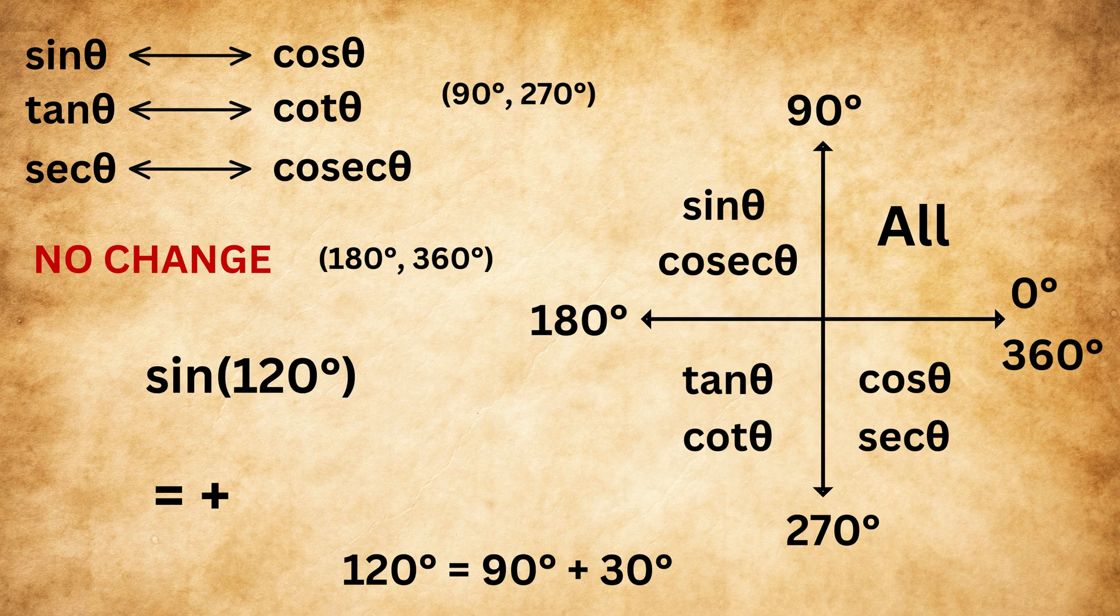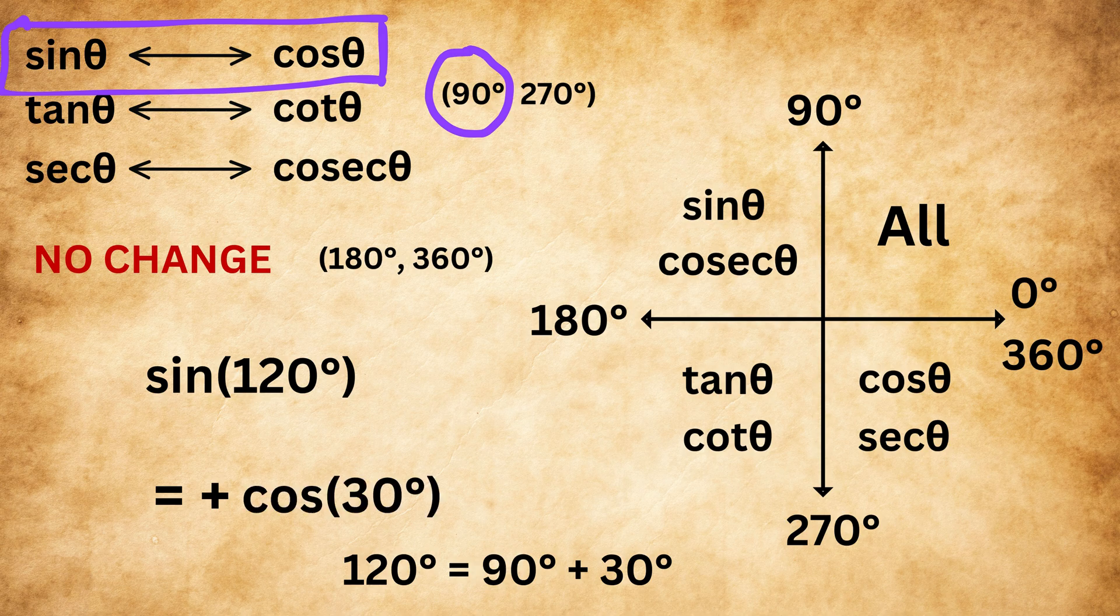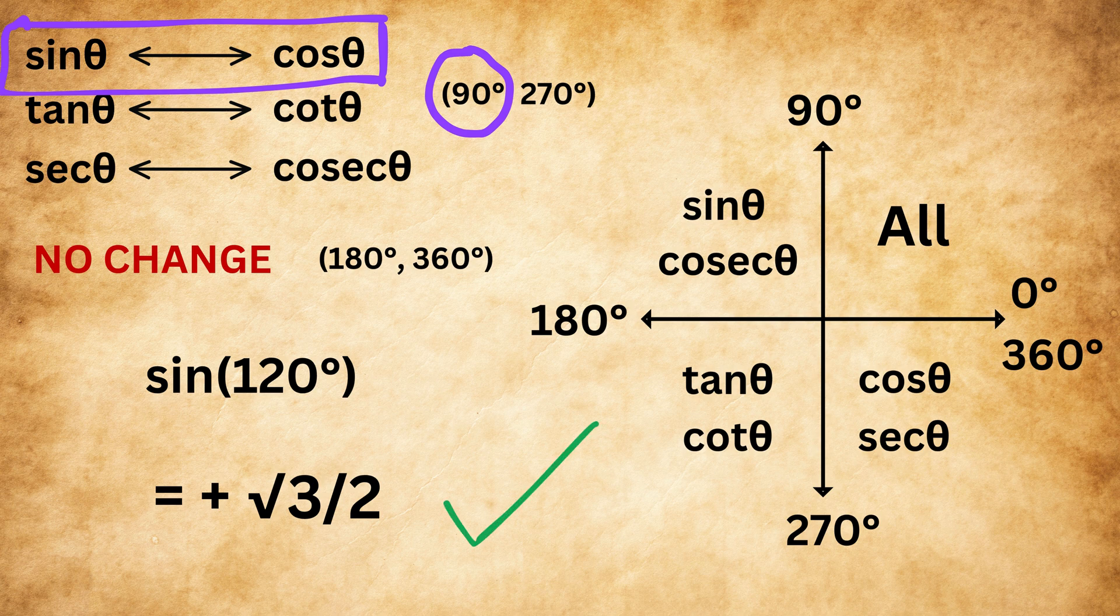Now, 120 is 30 degrees more than 90. Since it has crossed 90 degrees, sine changes to cosine. So sine 120 becomes cosine 30. We know cosine 30 is root 3 upon 2. Therefore, sine 120 equals plus root 3 upon 2.